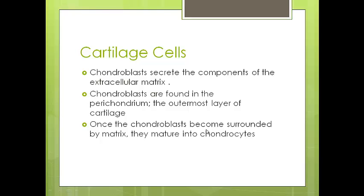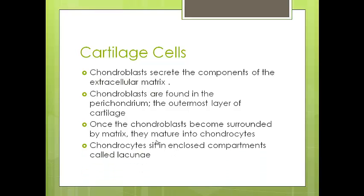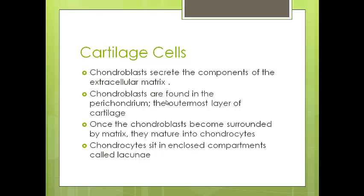Chondrocytes are basically matured chondroblasts that are now surrounded by extracellular matrix. Chondrocytes are found in enclosed compartments — their own separate spaces called lacunae. So you've got the outermost layer of the cartilage, the perichondrium, where we find the chondroblasts. Once they release the extracellular matrix, they are surrounded by it, separated into these little spaces or compartments called lacunae, and they become chondrocytes.